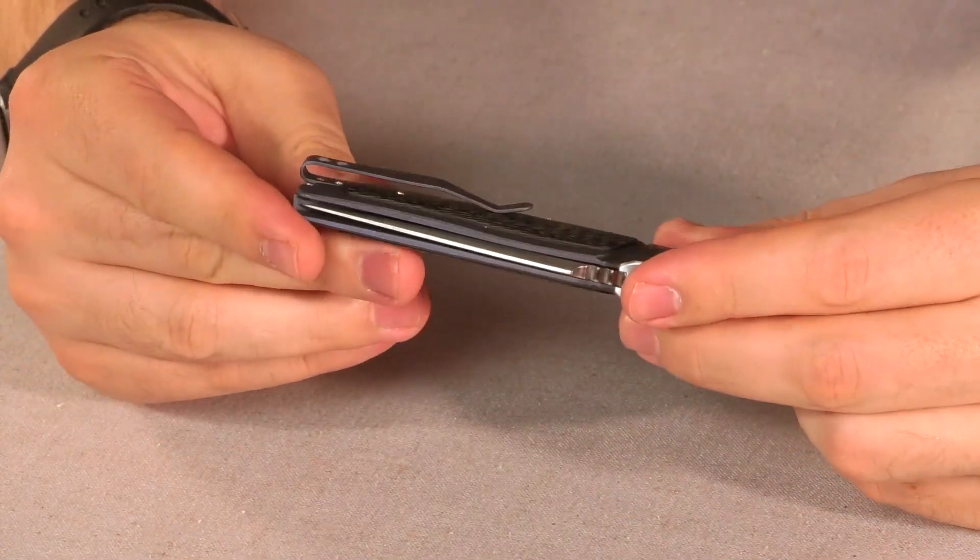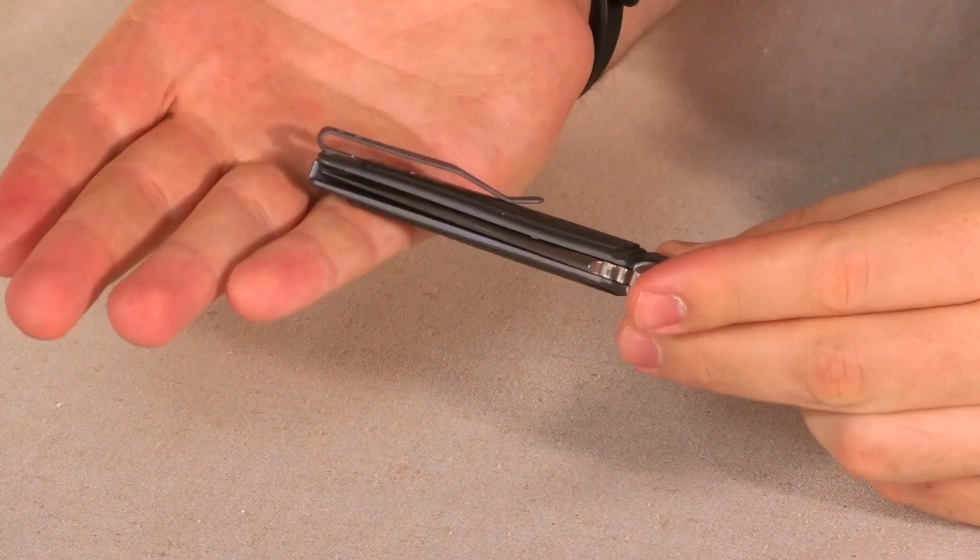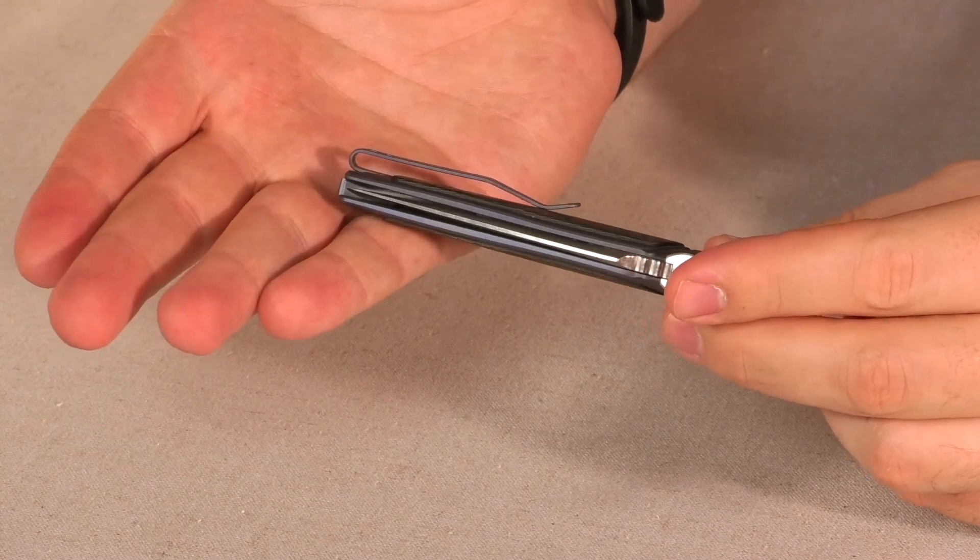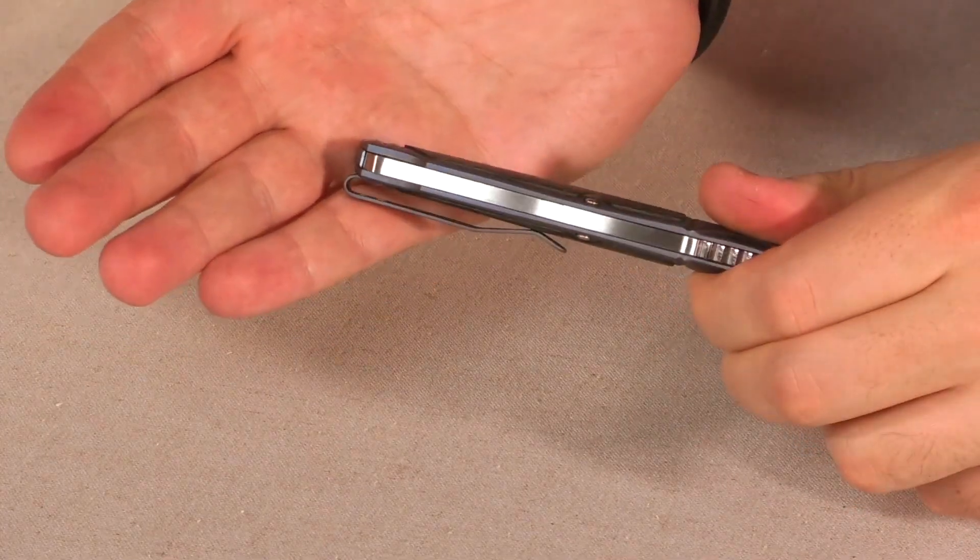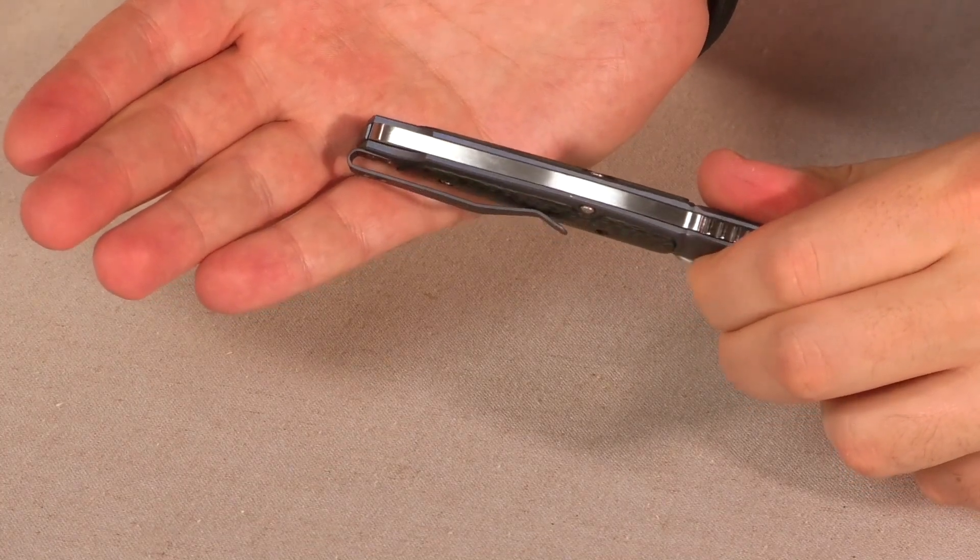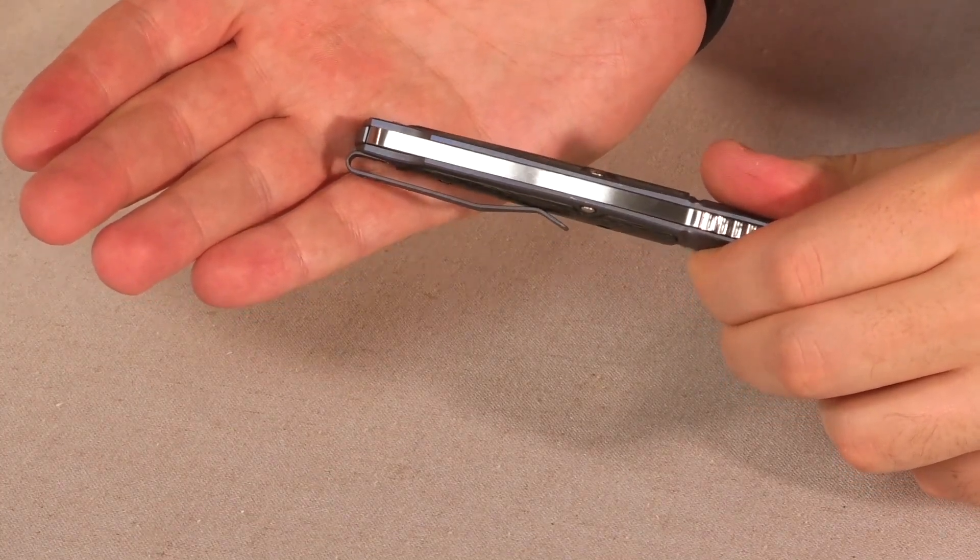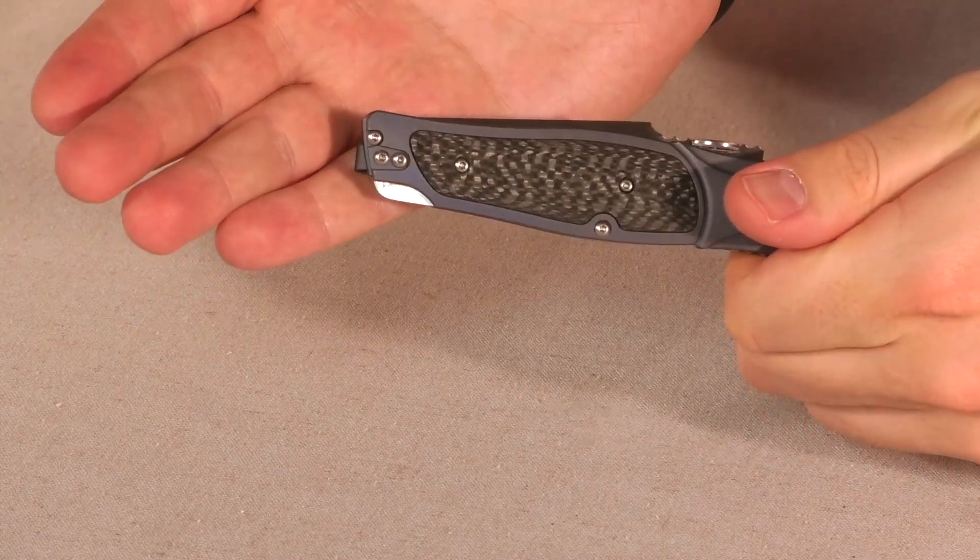It has a deep pocket clip and if I show you the right angle, the clip extends past it just a little bit. Yeah, so you're getting this fully deep in the pocket and it is reversible.